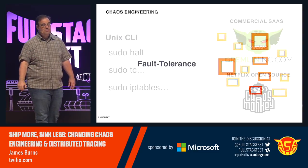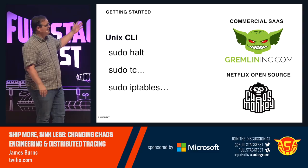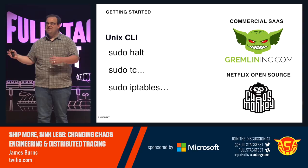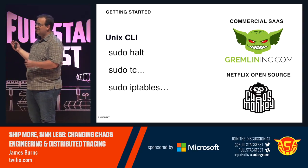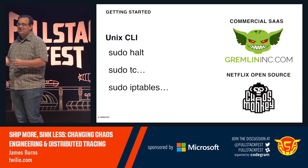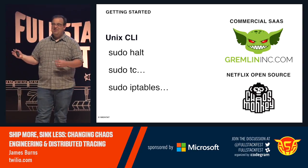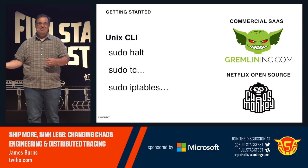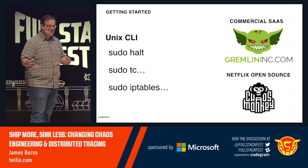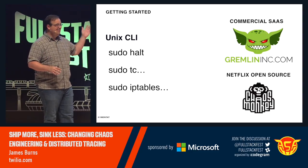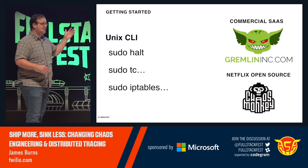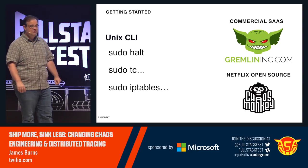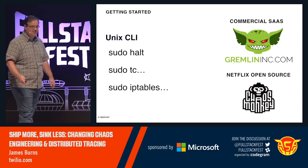How to get started: sudo halt is one of my favorites. There's also TC and IP tables — look up exactly how to use these because you can do bad things like locking yourself out of an instance if you IP tables block everything and can't SSH back in. There's also Gremlin Inc., a commercial SaaS tool with a nice GUI, scheduling, and those sorts of things. And of course the Netflix open source Chaos Monkey.